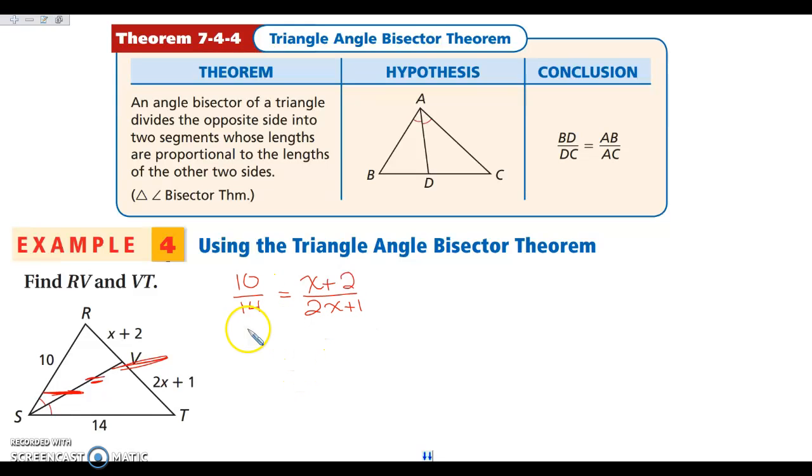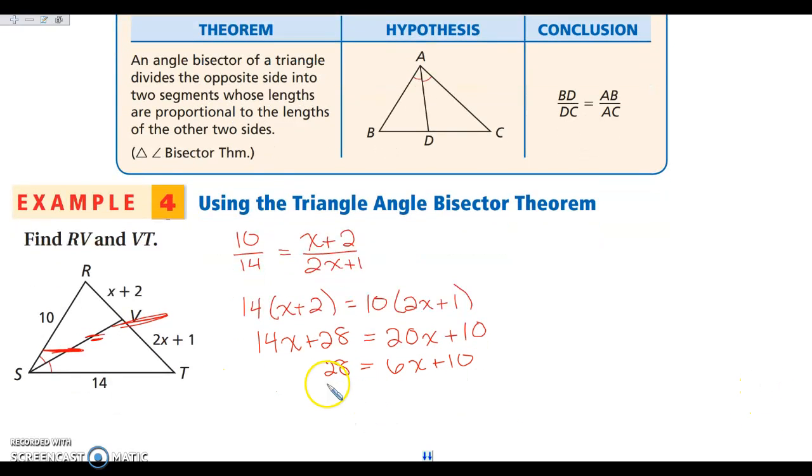So I'm going to set up 10 over 14 is equal to x plus 2 over 2x plus 1. So from here, we're going to go ahead and cross multiply. So I'm going to multiply 14 times x plus 2 is going to equal 10 times 2x plus 1. So we're going to distribute. We're going to get 14x plus 28 is equal to 20x plus 10. I'm going to subtract 14x from both sides. I'm going to get 28 is equal to 6x plus 10. We're kind of going to scroll down a little bit here. Subtract 10 from both sides. I'm going to get 18 is equal to 6x. And when we divide both sides by 6, I'm going to get that x is 3.